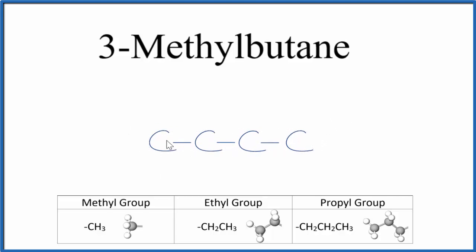We would have hydrogens on each carbon such that each carbon had four bonds. So we have our butane, and if we number them, one, two, three, four.